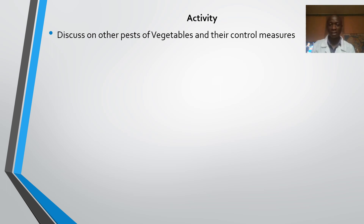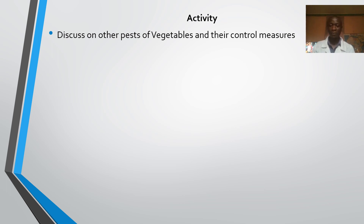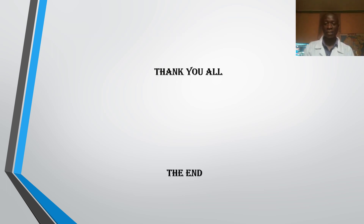There is an activity for you to do. As a learner, having discussed some important insect pests, you are encouraged to research and discuss any other pests of vegetables along with their control measures — and they don't necessarily have to be insects. In our next class, we will review this before we discuss the major diseases in vegetable crops. Thank you so much for listening and watching this presentation.